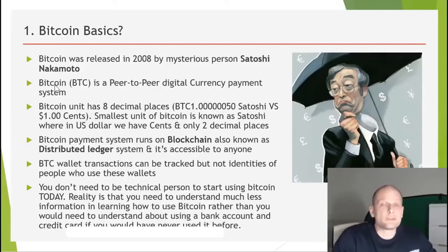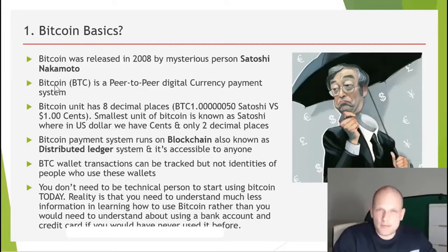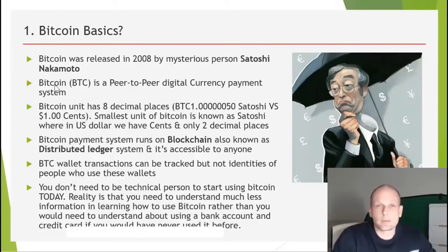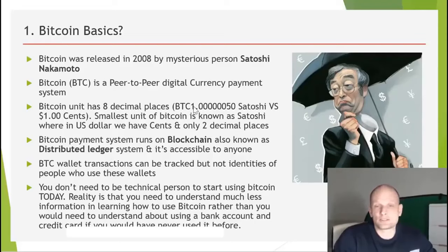There are no more financial institutions involved, and this is why banks and other financial institutions dislike Bitcoin so much — because with Bitcoin we can make payments directly. We control our funds, we control our Bitcoin, our assets privately.